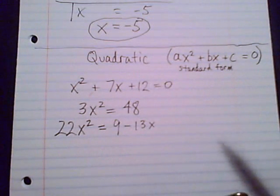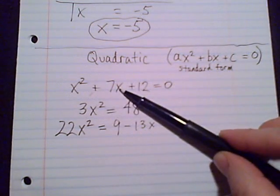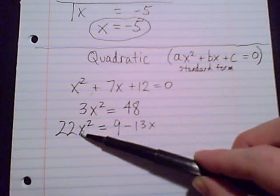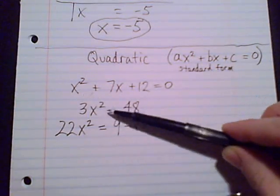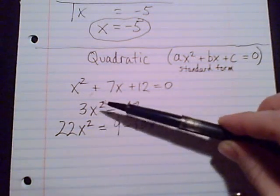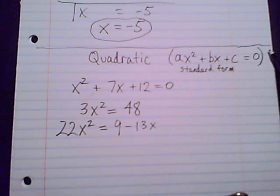Here are a few examples and what we should observe is that again we have just one variable X, but we have some terms where there is an x squared. Maybe we see a term that has just a regular X, maybe we don't. The feature that's consistent with these three equations and what makes them quadratic is that there is a term with x squared.